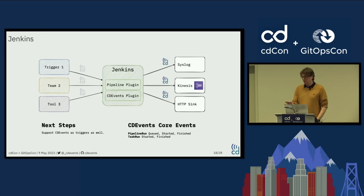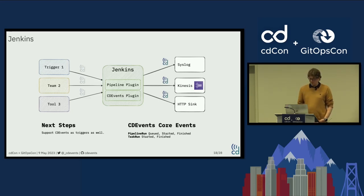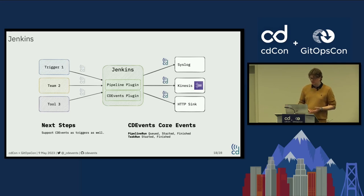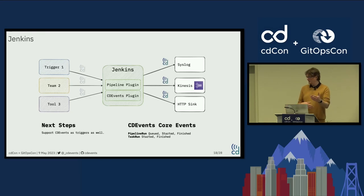For Jenkins, today we can produce CD events through the Jenkins plugin. Combined with the pipeline plugin, we're able to produce events from the core. When you're running a Jenkins pipeline, you can generate pipeline run, queued, started, and finished type of events that can be delivered either to Syslog for testing or to sinks like Kinesis or HTTP sink. The next step for the plugin will be to support ingesting events as well, so different tools or triggers could send CD Events to trigger a Jenkins pipeline.